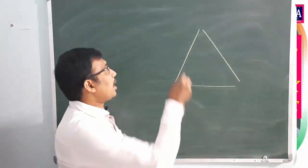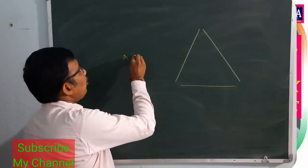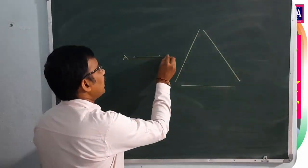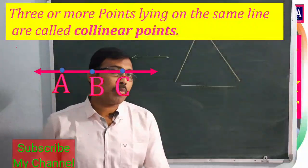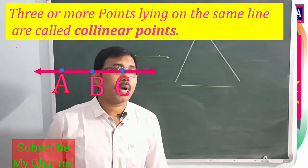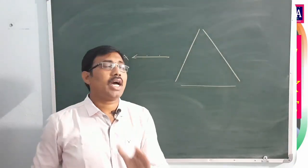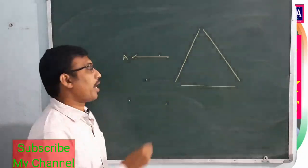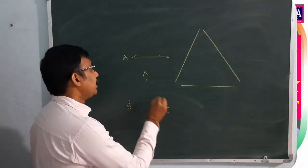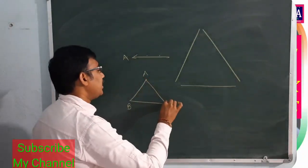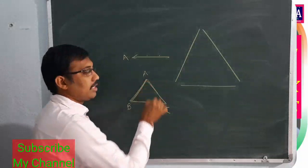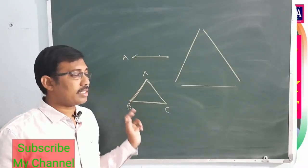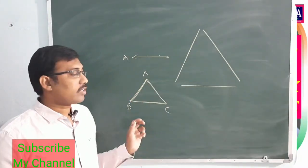Here, A, B, C are three points. Three or more points on the same line are called collinear points. A, B, C are non-collinear points. Join AB, BC, and CA. This forms a triangle. A triangle is a simple closed figure consisting of three line segments.